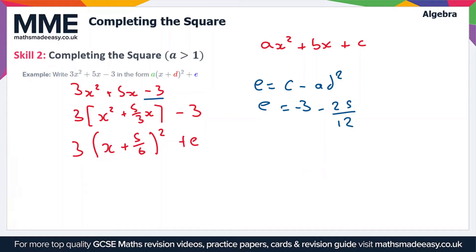But we need to write this expression for e as one number. At the moment we have e is equal to minus 3 minus 25 over 12. We can rewrite this as minus 36 over 12 minus 25 over 12. So minus 36 over 12 is going to give us minus 3, and then we're subtracting the 25 over 12. This is going to be equal to minus 61 over 12. So that's our value for e.